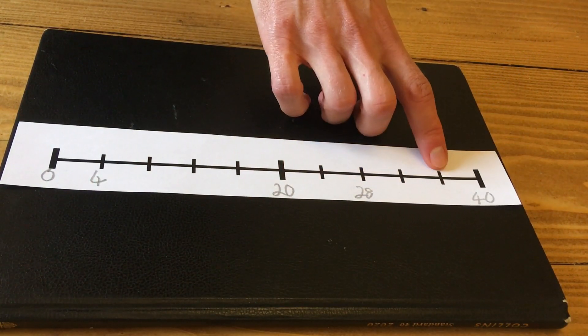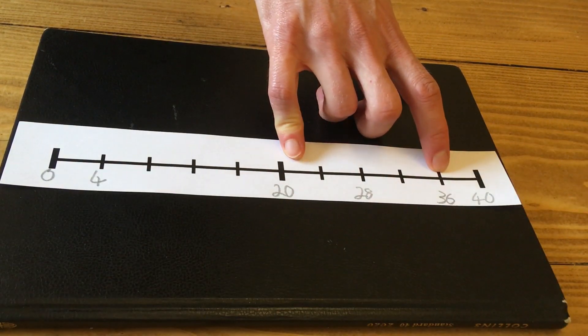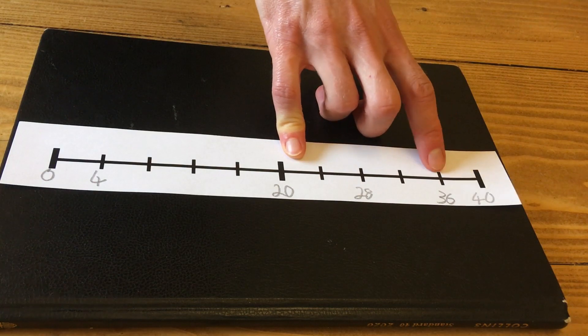And what about this one here? That one is thirty-six. How do you know? Because it is nine times forty, which is basically forty take away four.